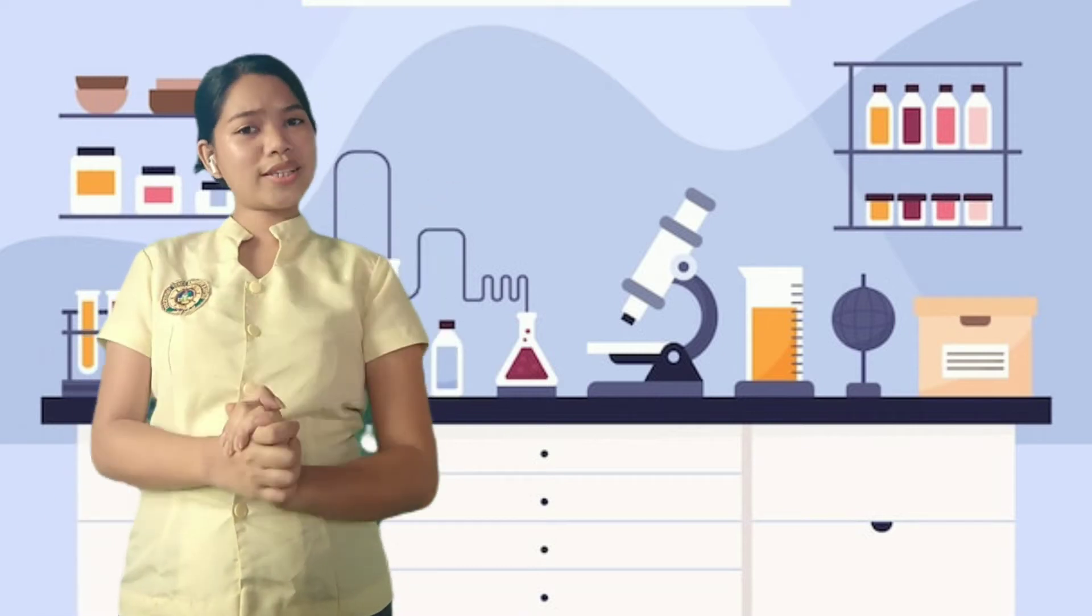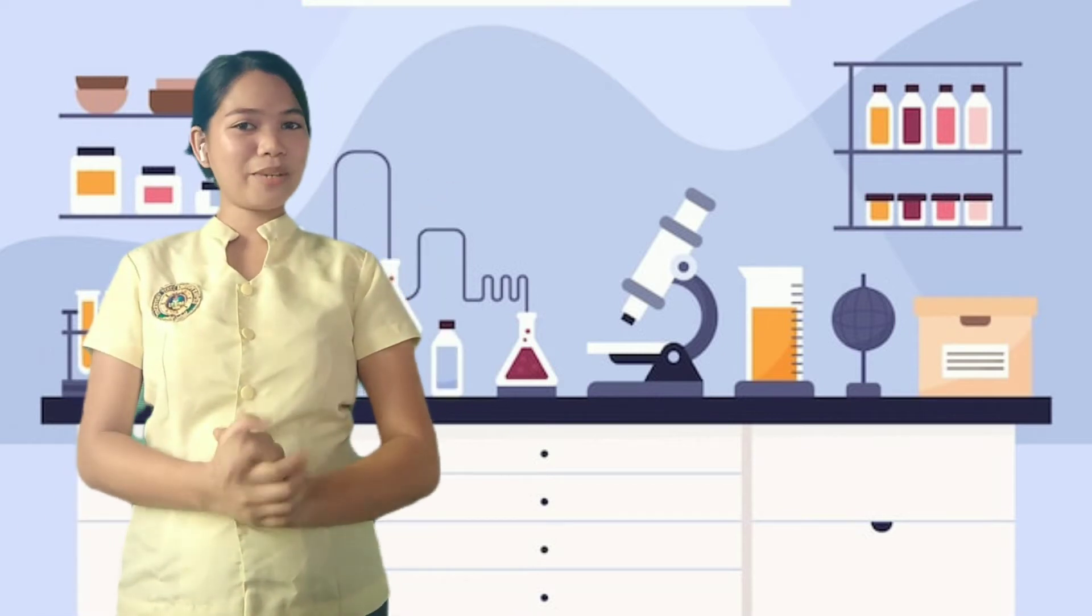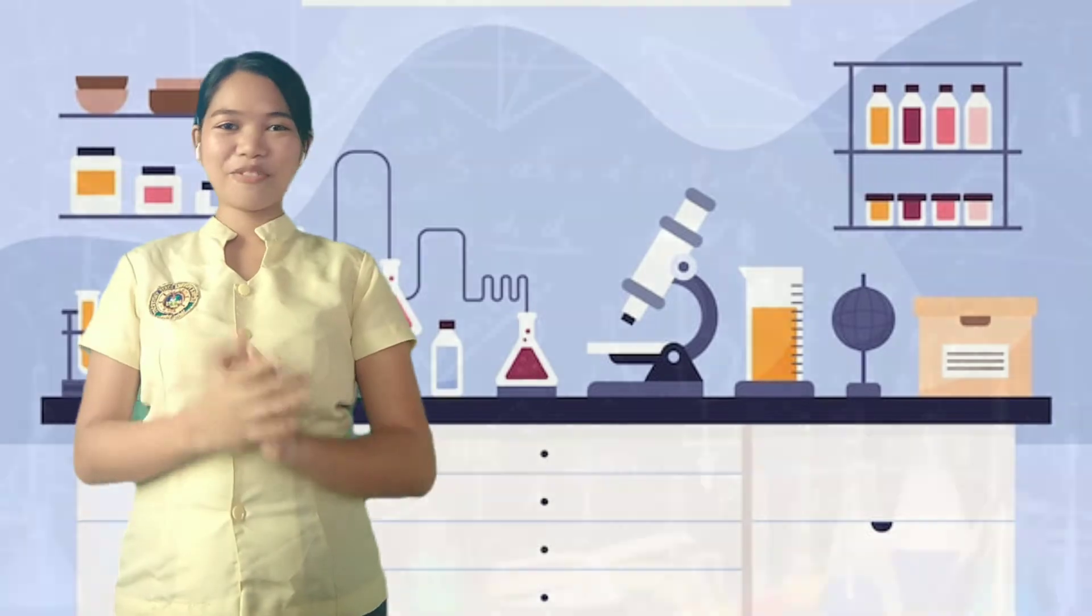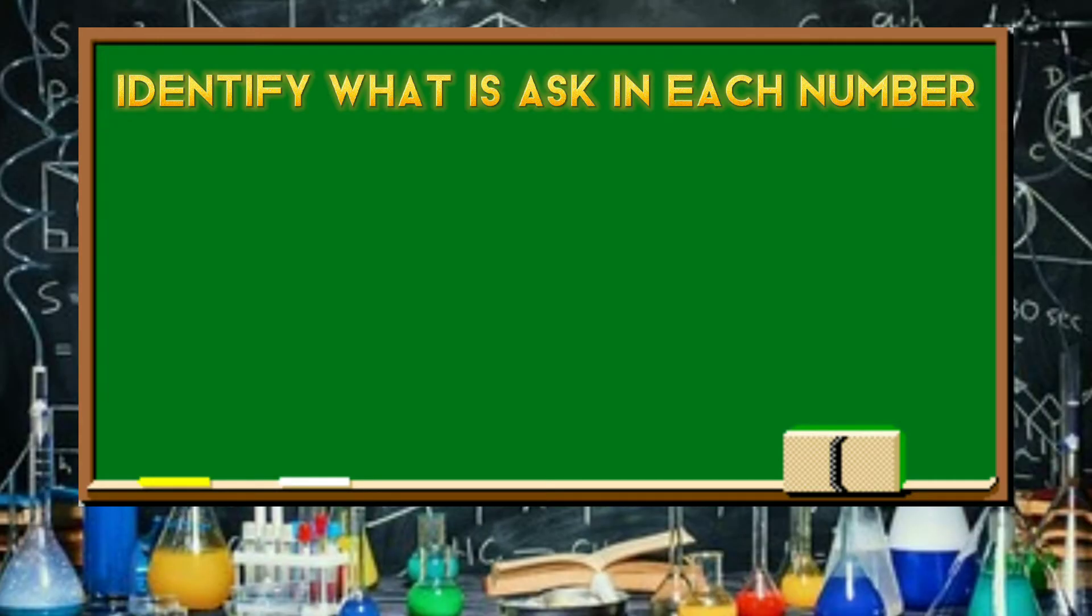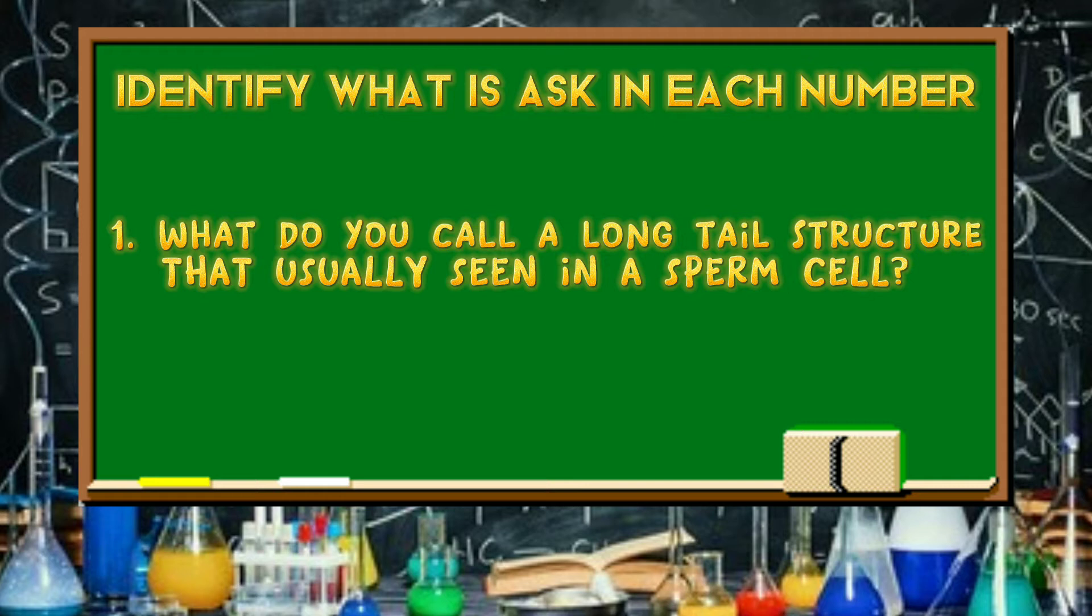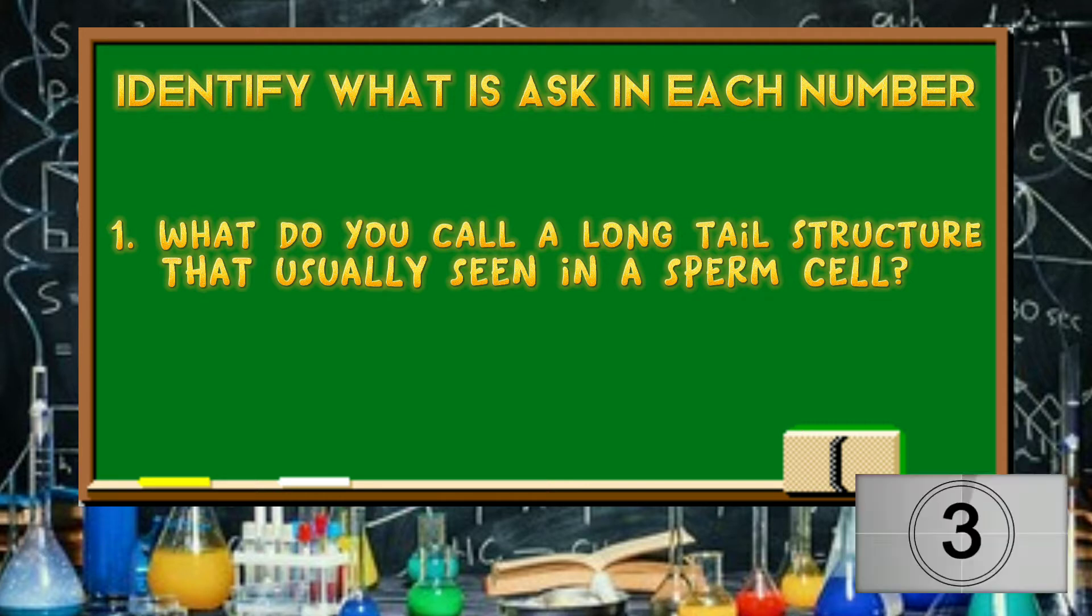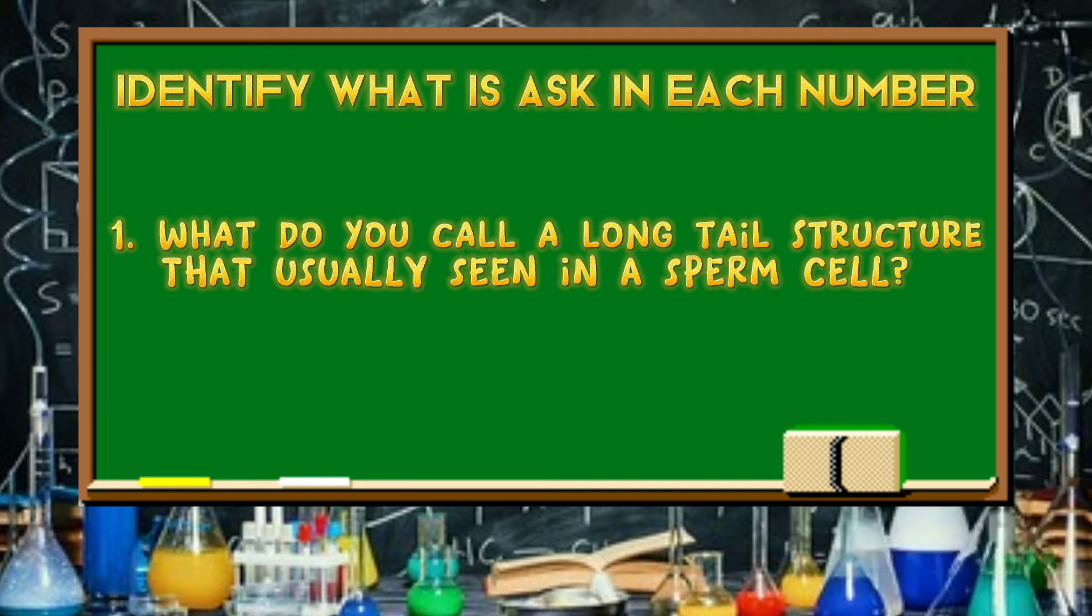So guys, remember what we discussed last meeting. Come on, let's find out! Identify what is asked in each number. What do you call a long-tail structure that usually is seen in a sperm cell? Flagellum.